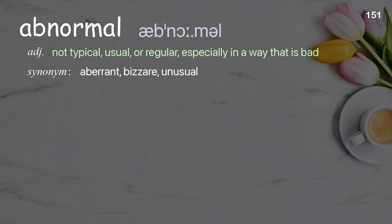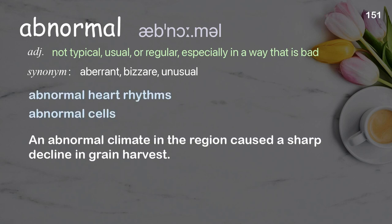Abnormal: not typical, usual, or regular, especially in a way that is bad. Examples: abnormal heart rhythms, abnormal cells. An abnormal climate in the region caused a sharp decline in grain harvest.